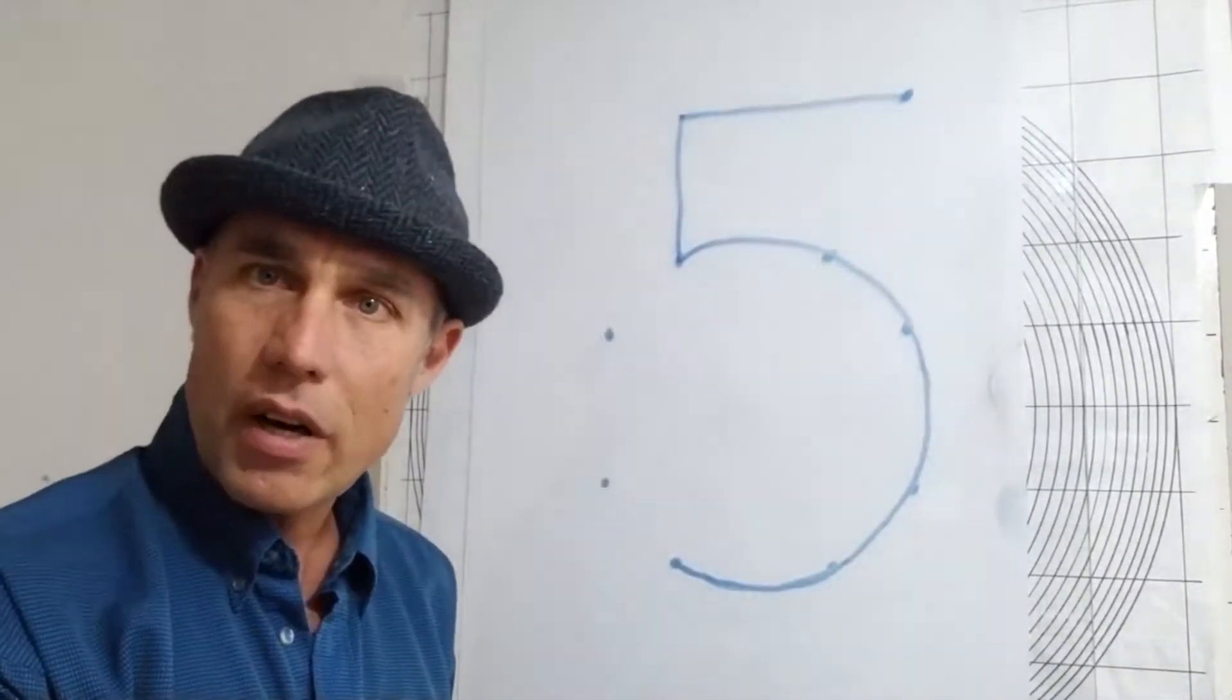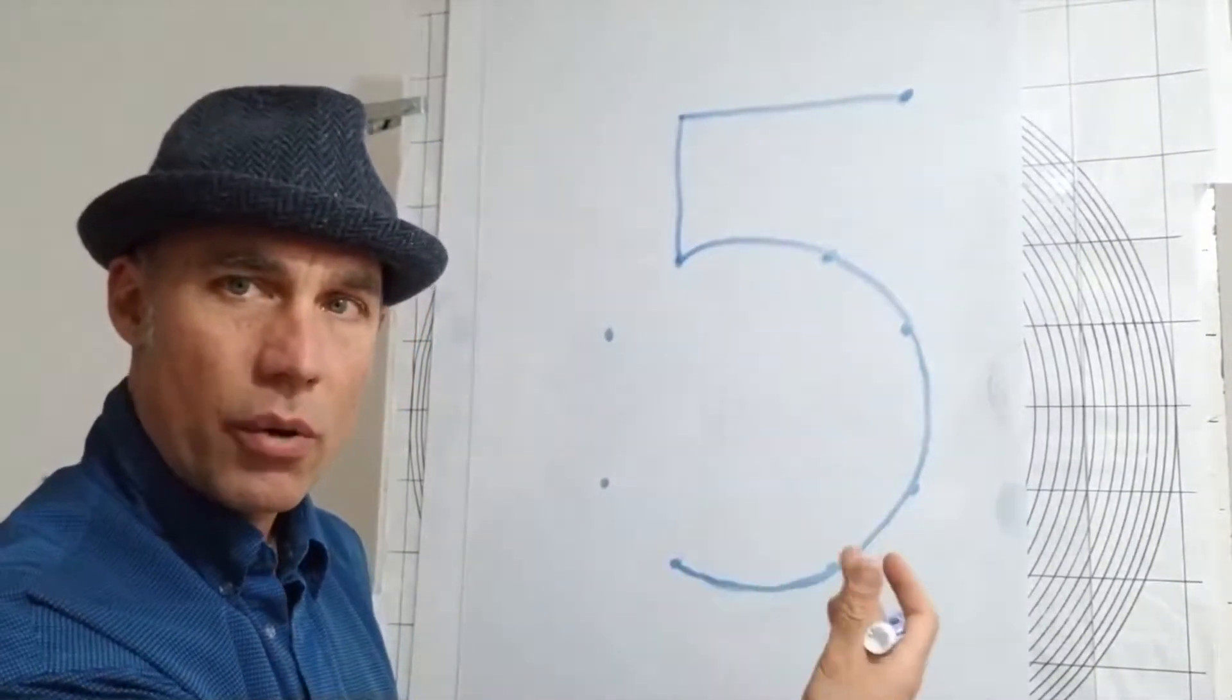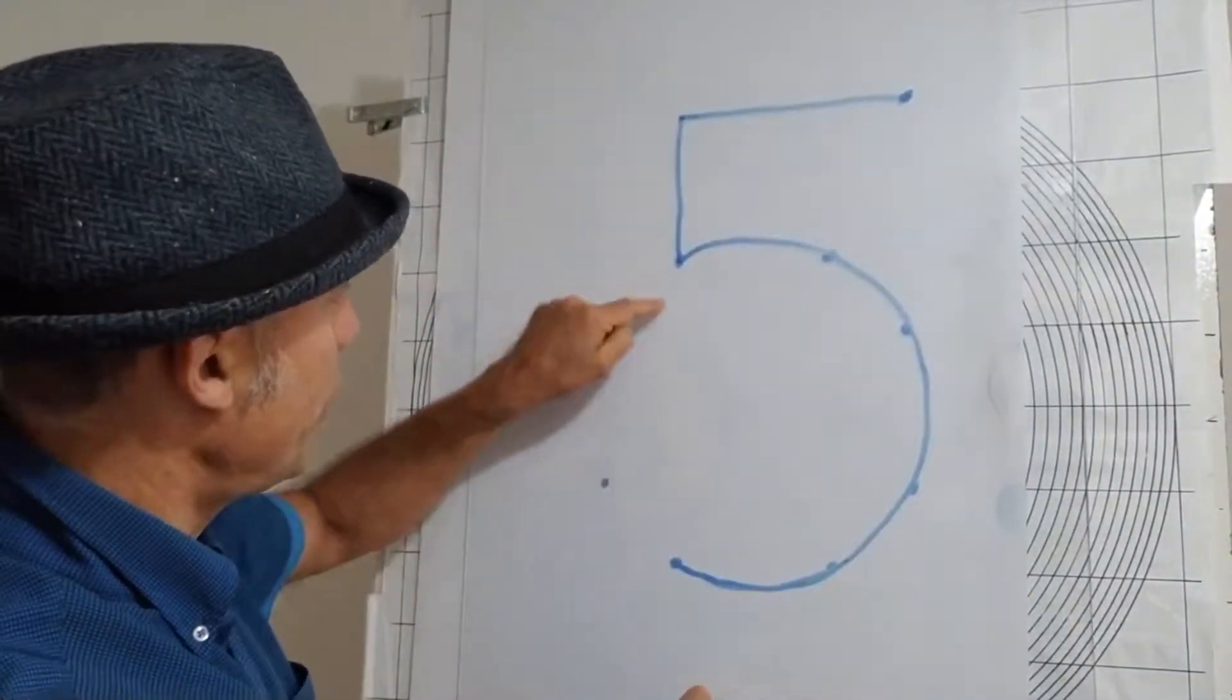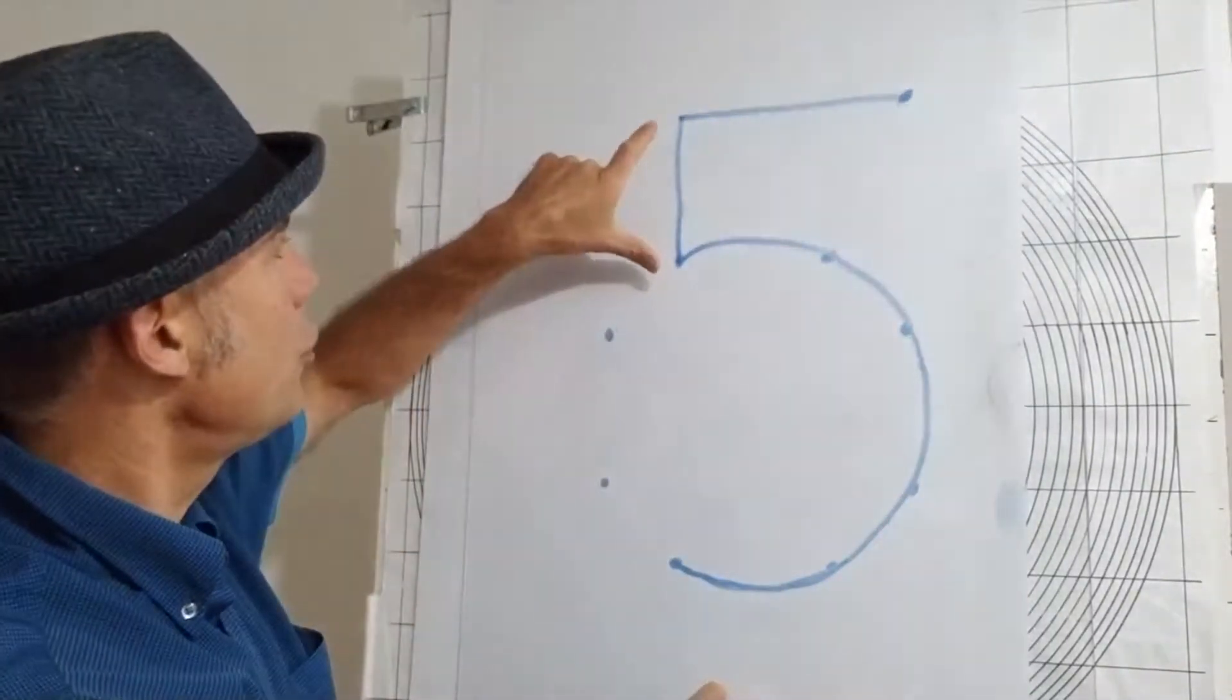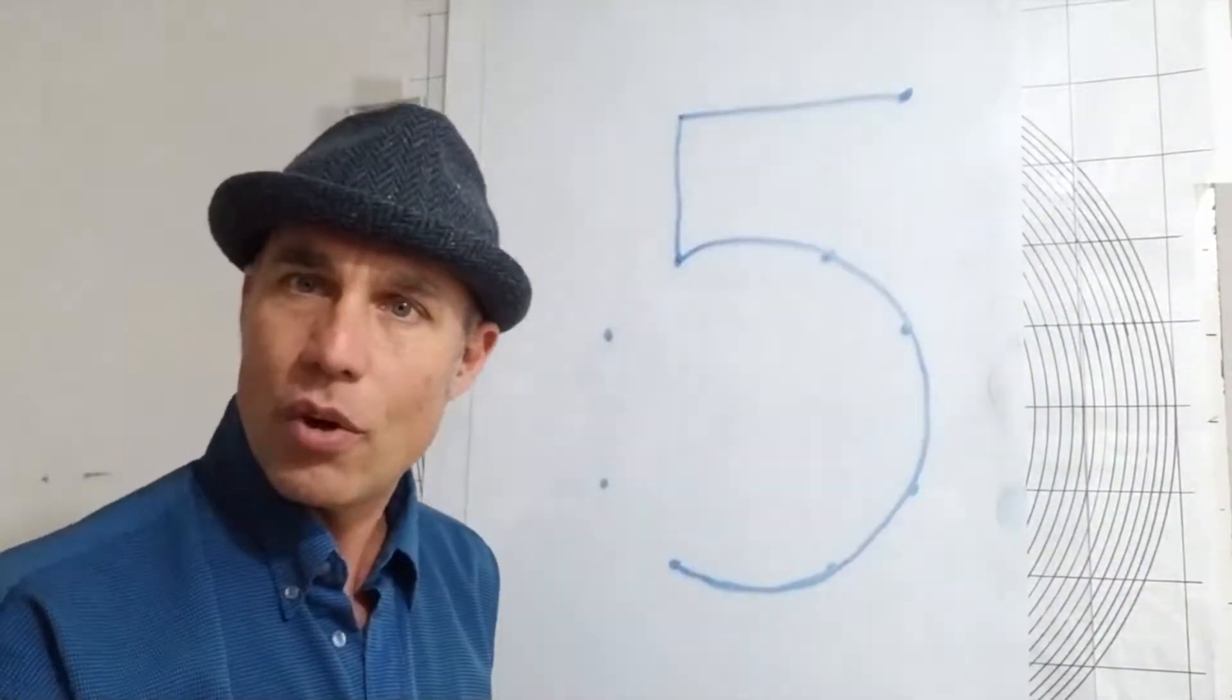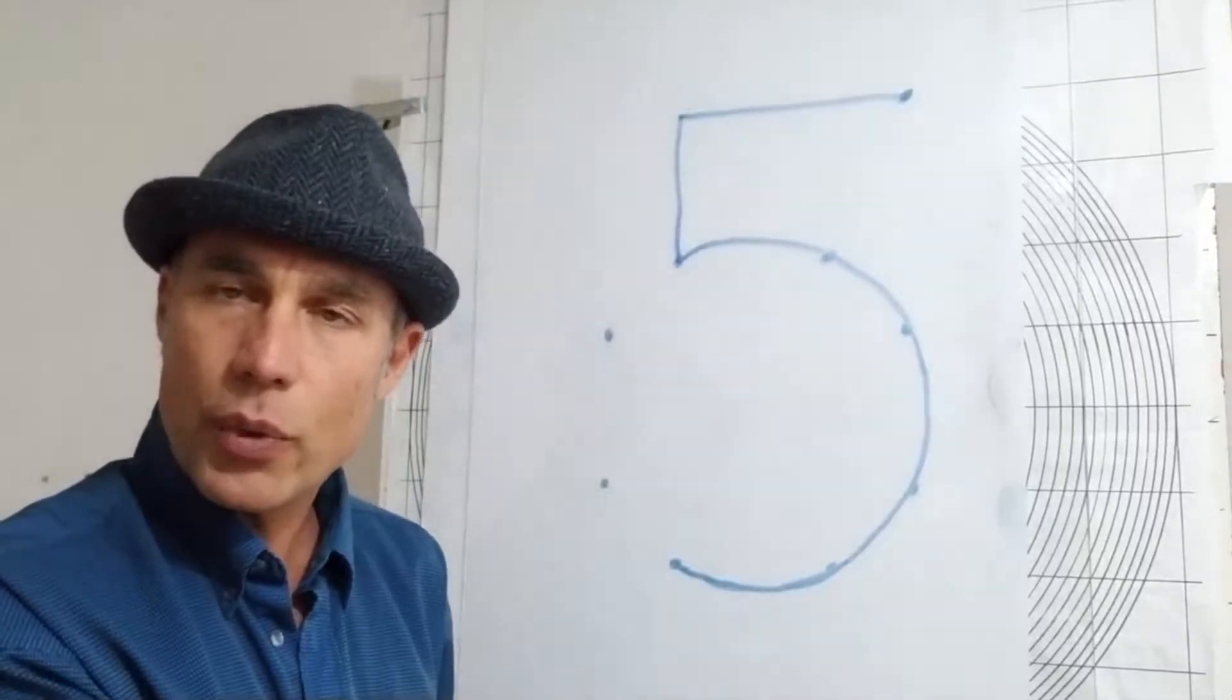So there you go, that's why the numeral five looks the way it does. You can see how it has all the right proportions there and the distance between these two points is four, so you have two, three, and four, and then five and so on. So that's why the numeral five looks the way it does.